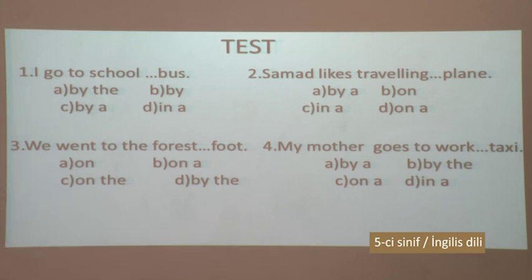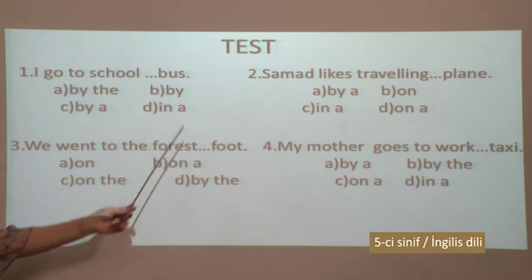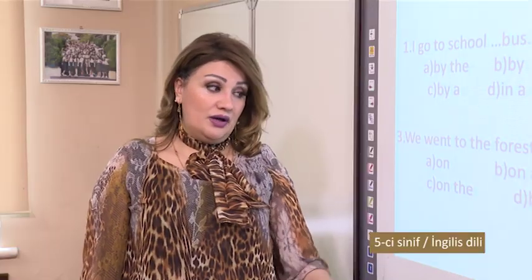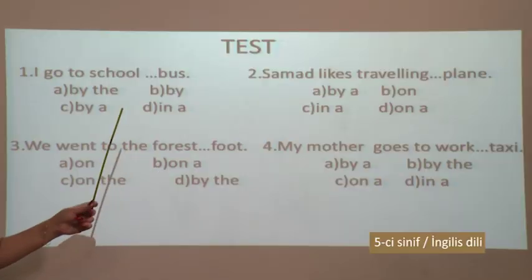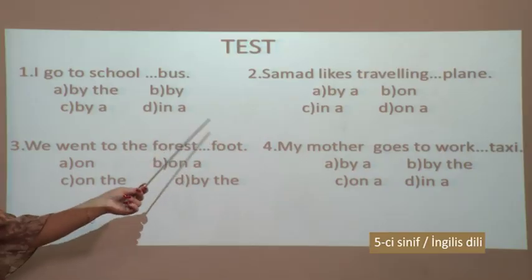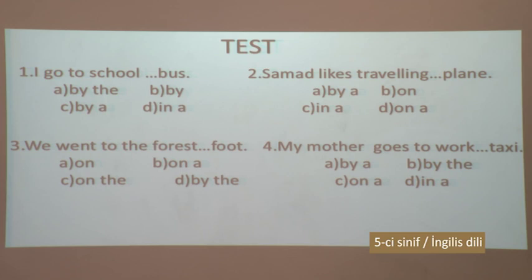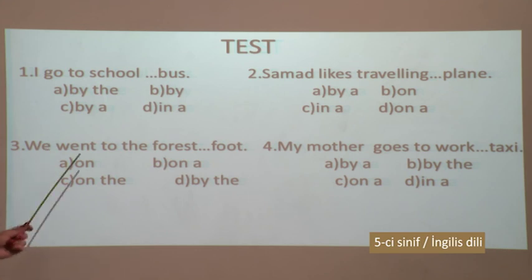The third test: We went to the forest - A: on foot, B: on the foot, C: on a foot, D: by the foot. As we know, after 'by' we shouldn't use an article. After 'on' we have the expression 'on foot' - to go somewhere on foot. Between 'on' and 'foot' we shouldn't use any article. Therefore the correct variant is A - on foot.